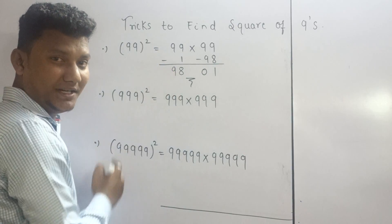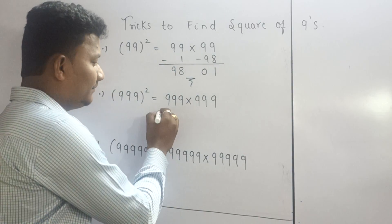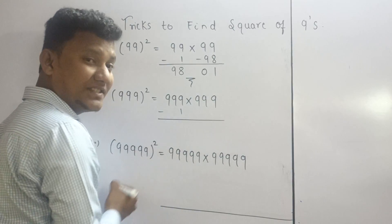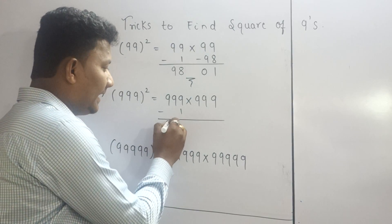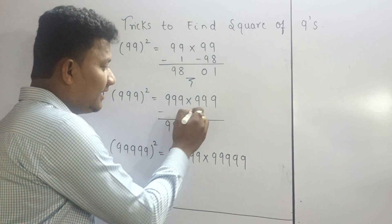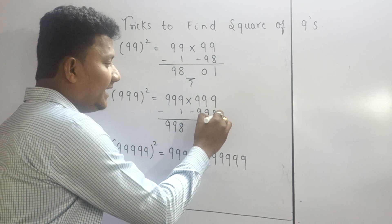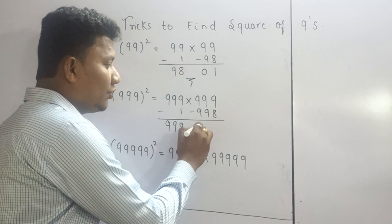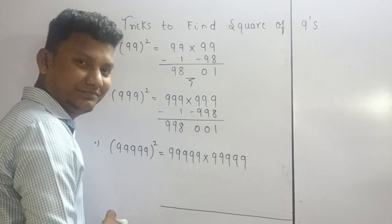Apply the same concept, same fundamental. Minus 1 to the first section. So you will get 998. Take this answer, subtract with 998. So you will get 001. That's it.